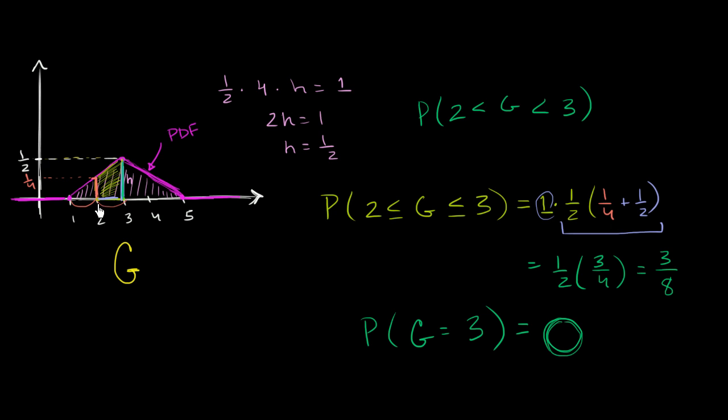Any number, it could be 2.00001 or 2.99999999. We're just not talking about the scenario where it's exactly 3 or the scenario where it's exactly 2. What is this probability going to be, where these are strictly less than signs, not less than or equal?